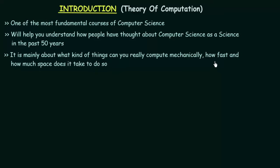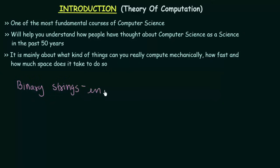We talked about how fast and how much space it takes. Let us focus on what kind of things can you really compute mechanically. To make this point clear, let us take a simple example. Let us say I want to design a machine that accepts all binary strings that end in 0. My machine should accept all binary strings that end in 0 and should reject all other strings that do not end in 0.